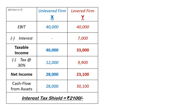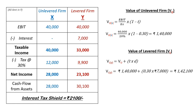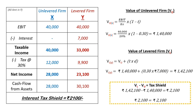The excess cash flow of rupees 2,100 comes from what we call the interest tax shield. The value of unlevered firm X is calculated by dividing EBIT by cost of equity and multiplying by (1 minus tax rate), giving rupees 1,40,000. The value of levered firm Y is the sum of the unlevered firm value plus the discounted present value of tax savings, amounting to rupees 1,42,100. It is clear that the value of the levered firm is more than the unlevered firm, and it is more by the tax shield.